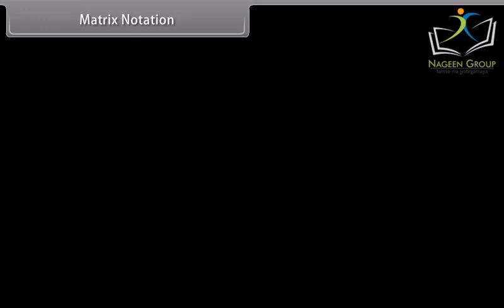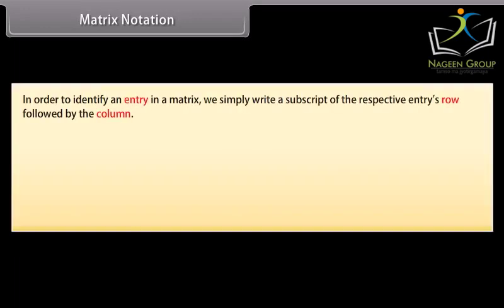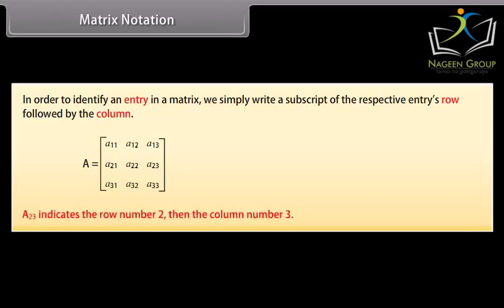Matrix notation. In order to identify an entry in a matrix, we simply write a subscript of the respective entries row followed by the column. In matrix A, we write A 2, 3 to denote the entry in the second row and the third column. A 2, 3 indicates the row number 2 and the column number 3.